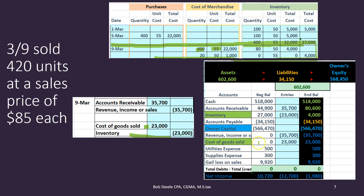Cost of goods sold goes up by $23,000, which brings net income down. What's the effect on net income of this transaction? It went up by $35,700 from the sales price (420 units times $85), and then went down by the cost of goods sold of $23,000. Therefore net income went up in the credit direction by $12,700.